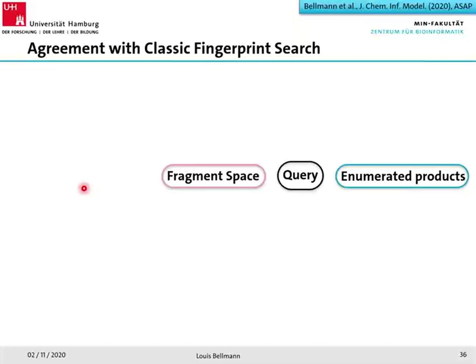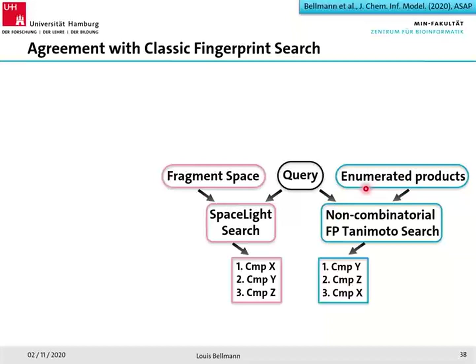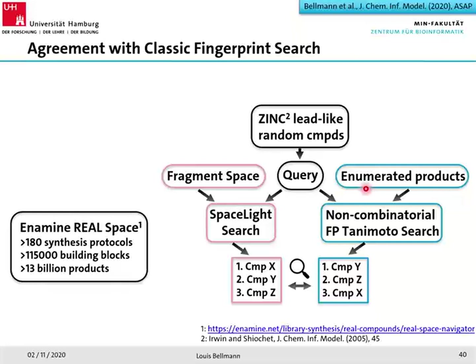To answer this, we pick a small fragment space, enumerate all its products, pick a query compound, and then do two things: search with SpaceLight in the fragment space directly, or do a classic sequential fingerprint search over all enumerated products with the same query. Both give a ranked list of all compounds — most similar at rank one — and we ask how similar these two lists are. We chose 500 random compounds from the ZINC lead-like subset.